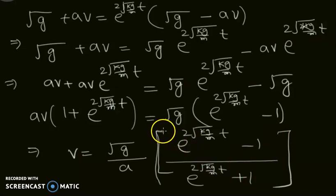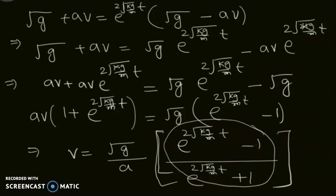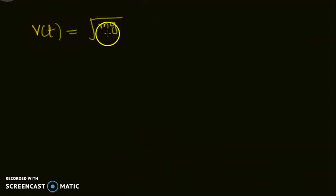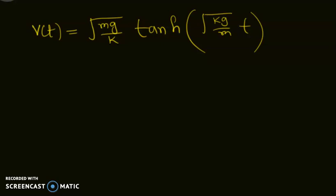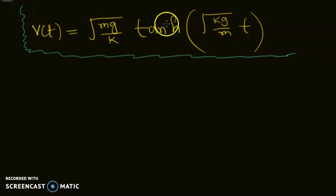This expression is equal to the hyperbolic tangent function. Converting and replacing the value of a = √(k/m), we get the final solution: v(t) = √(mg/k) · tanh(√(kg/m) · t).